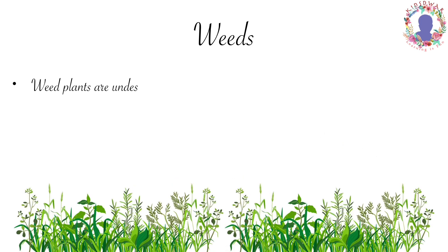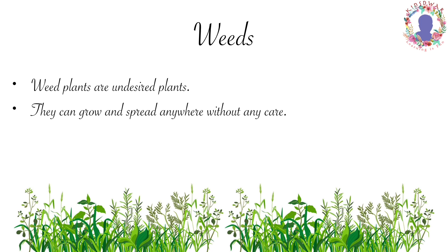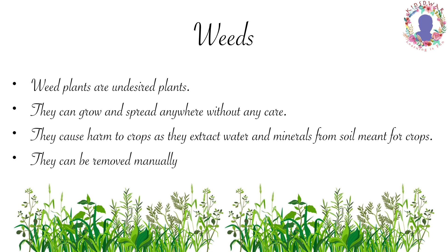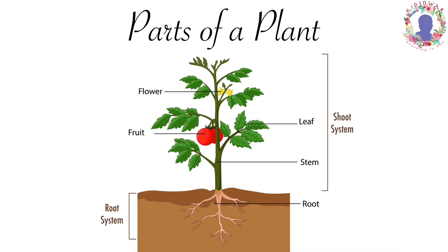Weed plants are undesired plants. They can grow and spread anywhere without any care. They cause harm to crops as they extract water and minerals from soil meant for crops. They can be removed manually or by using herbicides. A plant is divided into two parts: root system and shoot system.